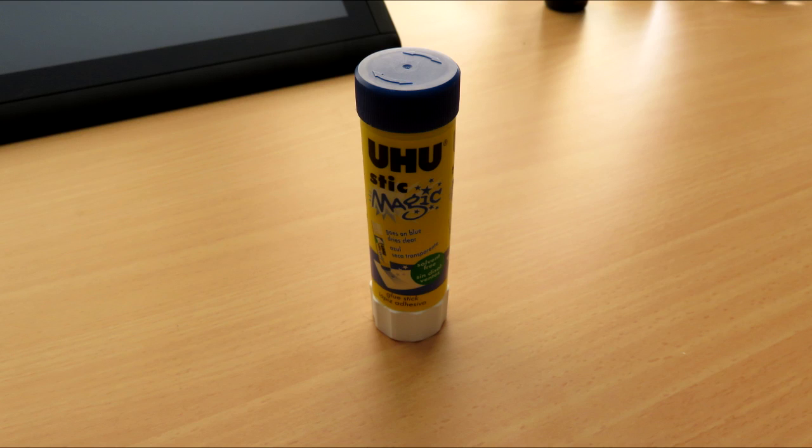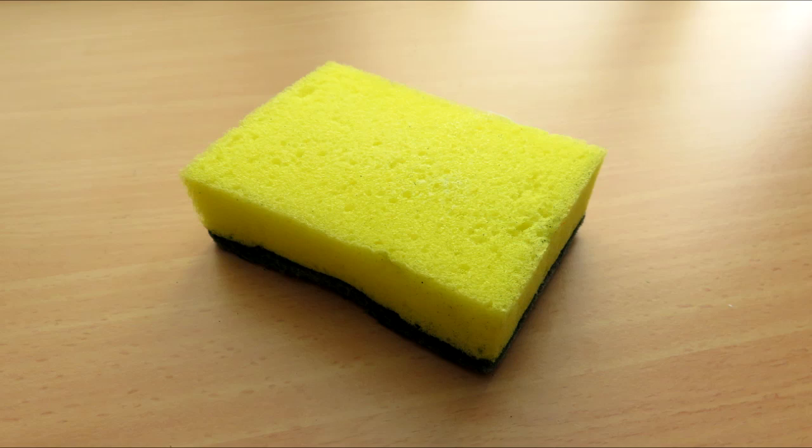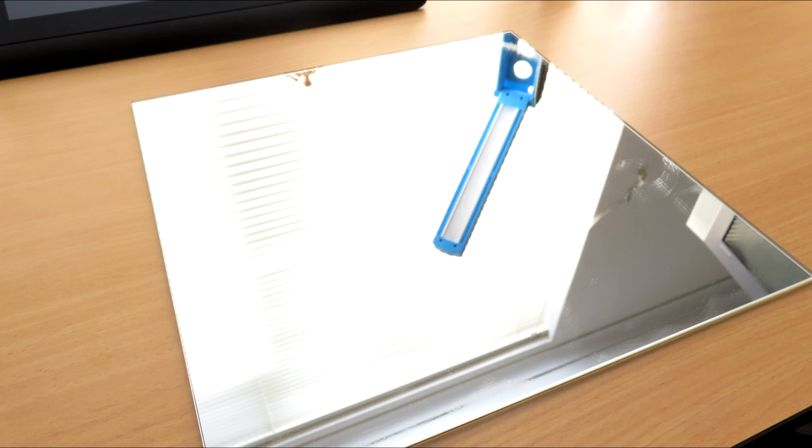The next thing you'll need is a glue stick. I'm just using Uhu magic stick. We'll need a clean sponge and some water, and a glass print surface. I'm just using a mirror from Ikea.